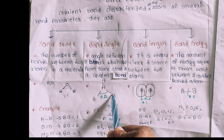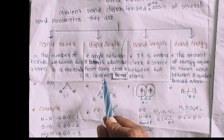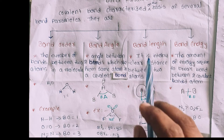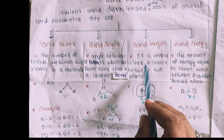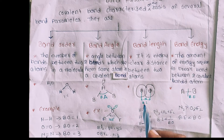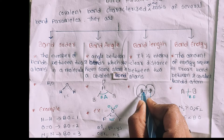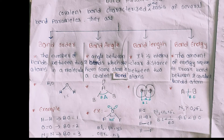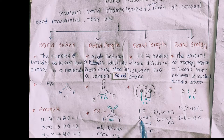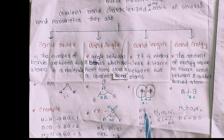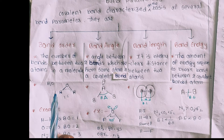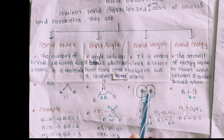Bond Length. Bond length is the internuclear distance between two bonded atoms. Here you can see the distance between atoms represents the bond length. For example, consider HI, HBr, HCl, and HF — each has a different bond length. If you calculate the bond length for these molecules, you will see how bond length varies.